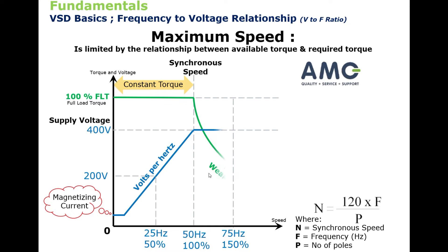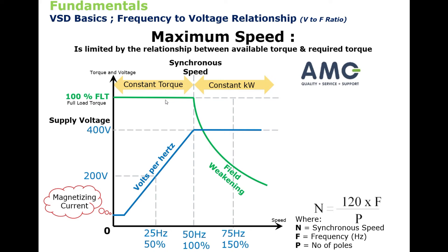If we overspeed the motor, there's not enough voltage in the variable speed drive to achieve the voltage required to flux the iron correctly. So above 50 Hertz, the system becomes constant kilowatts, where it was constant torque below 50 Hertz.